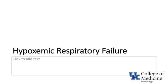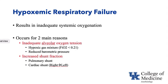Hypoxemic respiratory failure results in inadequate systemic oxygenation, whether that be inadequate pulse oximetry or inadequate partial pressure of oxygen on blood gas. It occurs for two main reasons: inadequate alveolar oxygen tension caused by either a hypoxic gas mixture or reduced barometric pressure, or an increased shunt fraction caused by either increased pulmonary shunt or increased cardiac shunt, typically a right-to-left shunt.